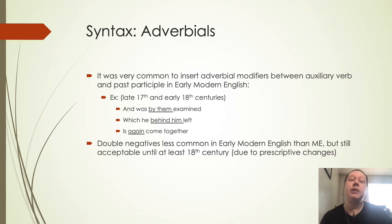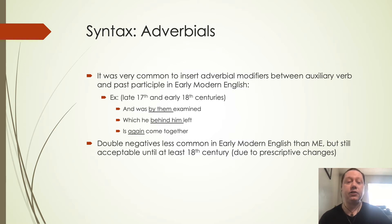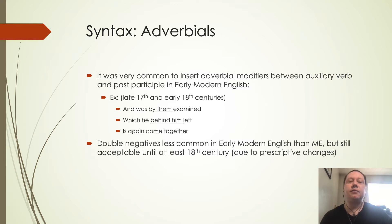Double negatives become less common in Early Modern English but are still acceptable until about the 18th century, and there are still dialects in present-day English that use double negatives. This was very common and natural in Middle English, but due to prescriptive changes that happened during the Early Modern time period, we see this fall by the wayside and not used very frequently, especially in more standardized dialects.